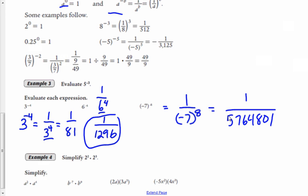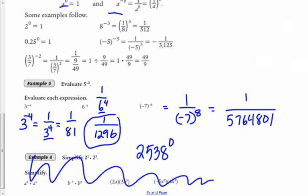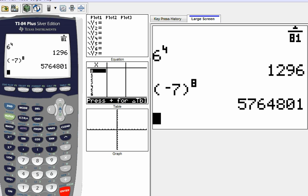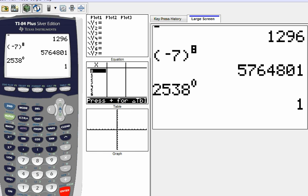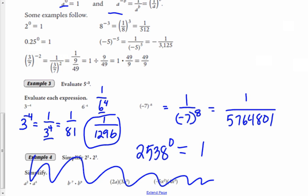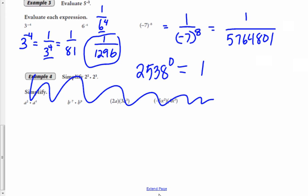All right. Before I do any of these examples, I'm going to give you just a couple more examples of different types of problems that you may run into. First of all, I want to do one to the zero power. So I'm going to make kind of a crazy one here: 2,538 to the zero power. Well, remember, anything to the zero power is just 1. And if you want to check that, go ahead. 2,538 to the zero power equals 1.